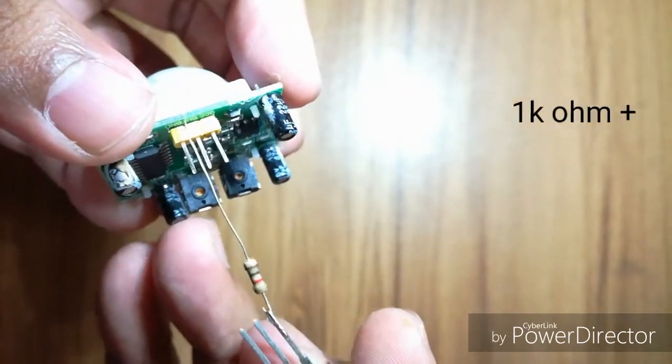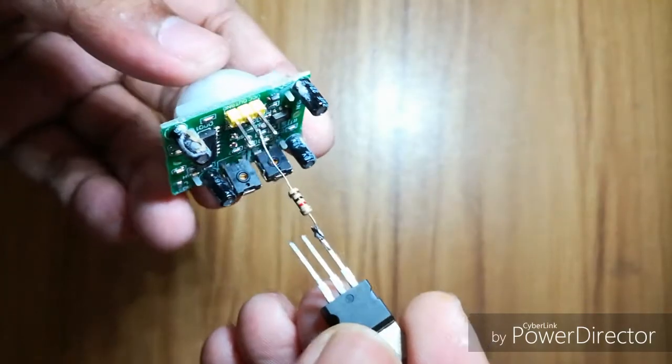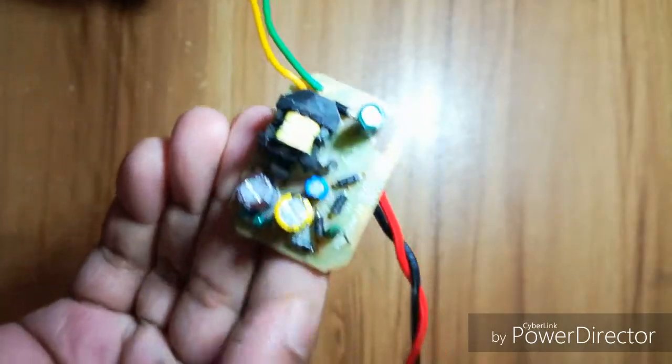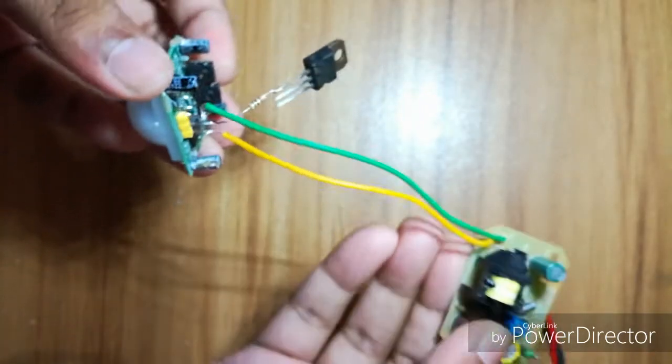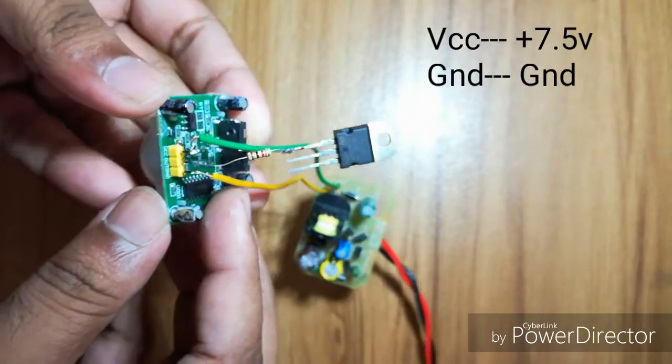Then I connected the power supply to the sensor. The plus of the power supply connects to the VCC, and the ground goes to ground.